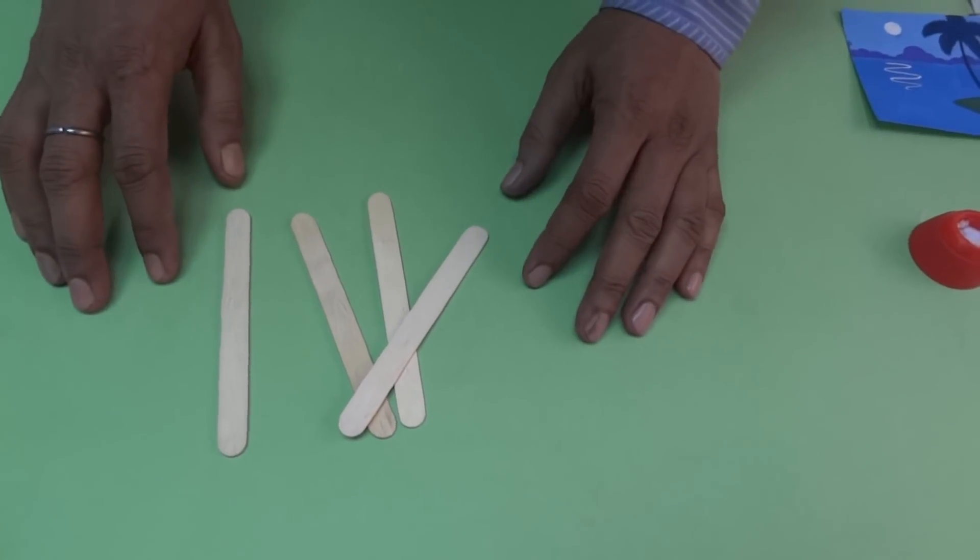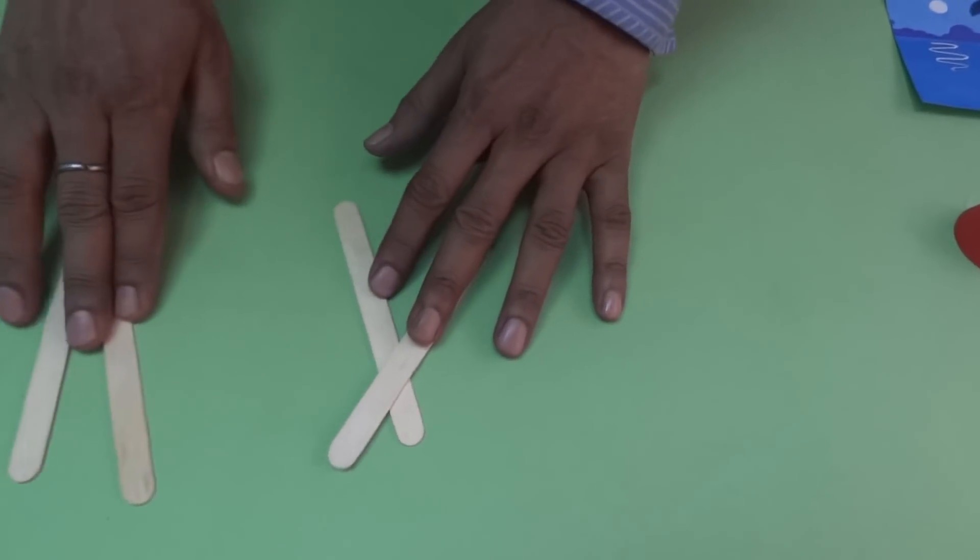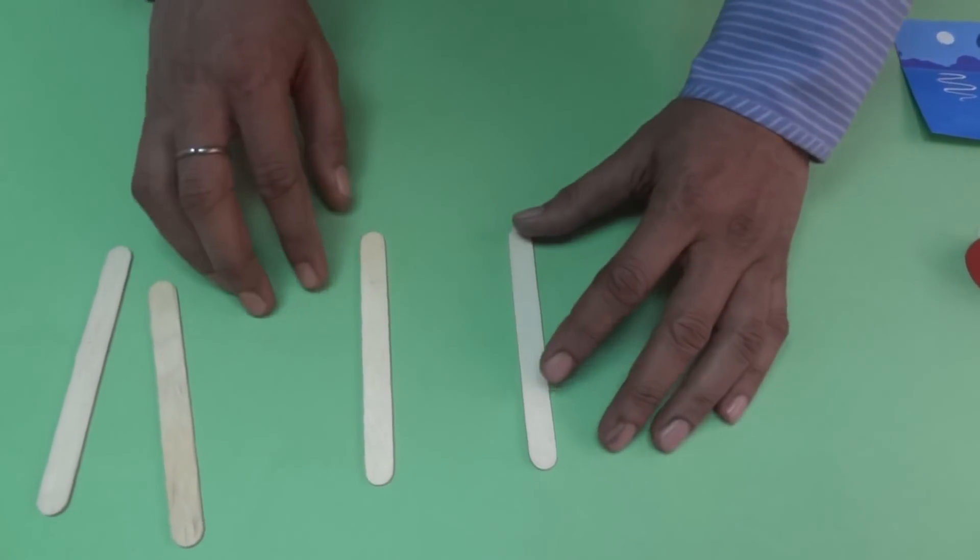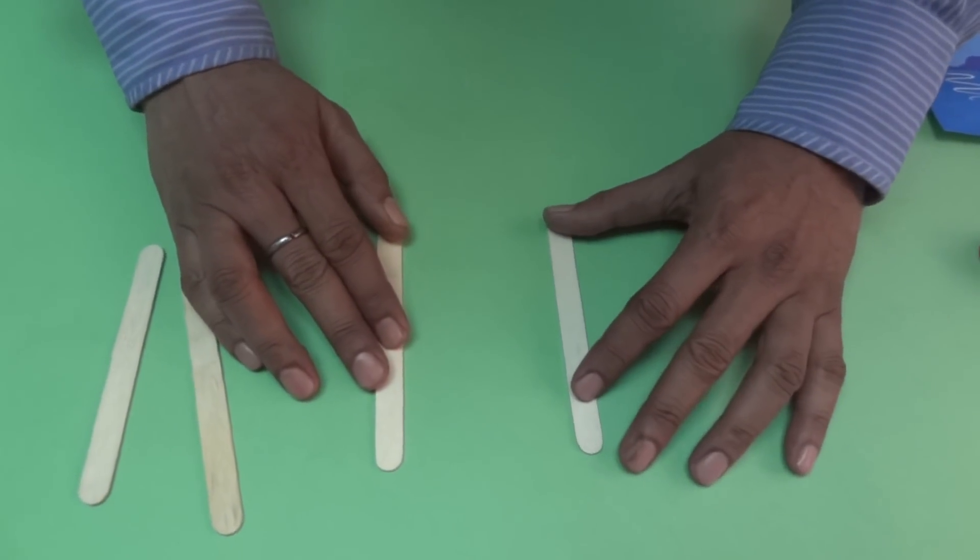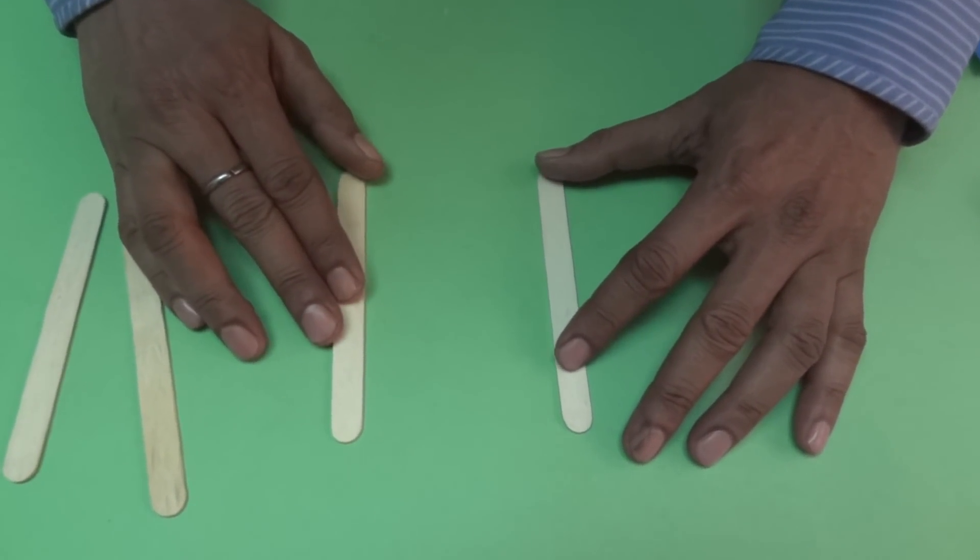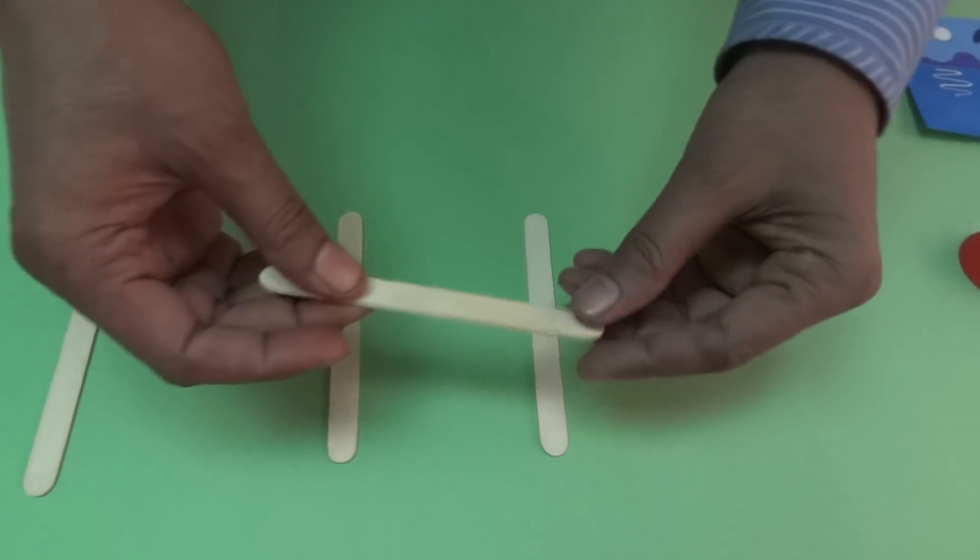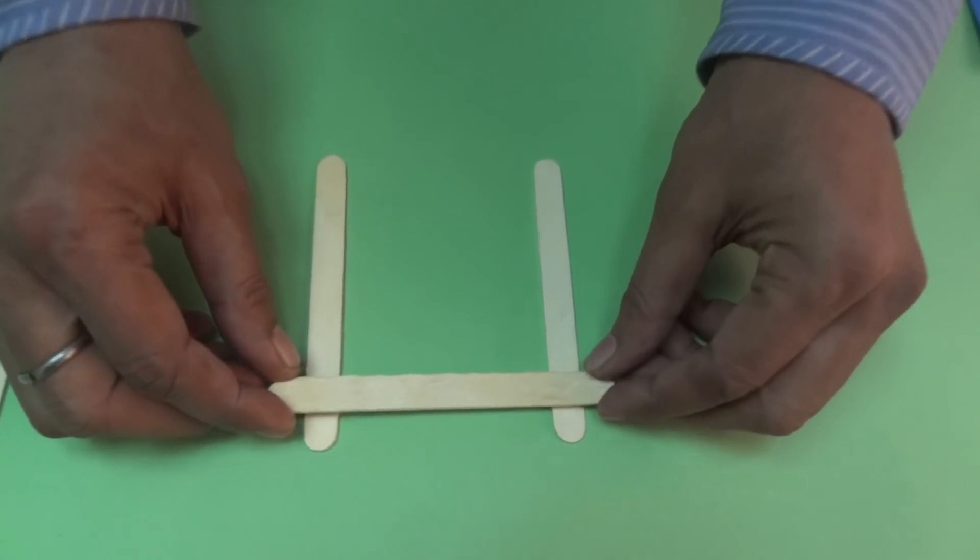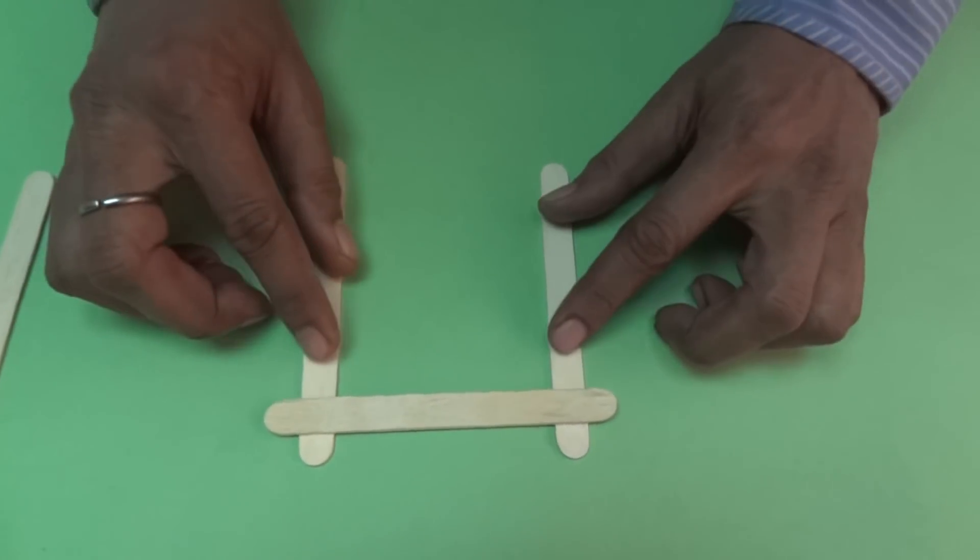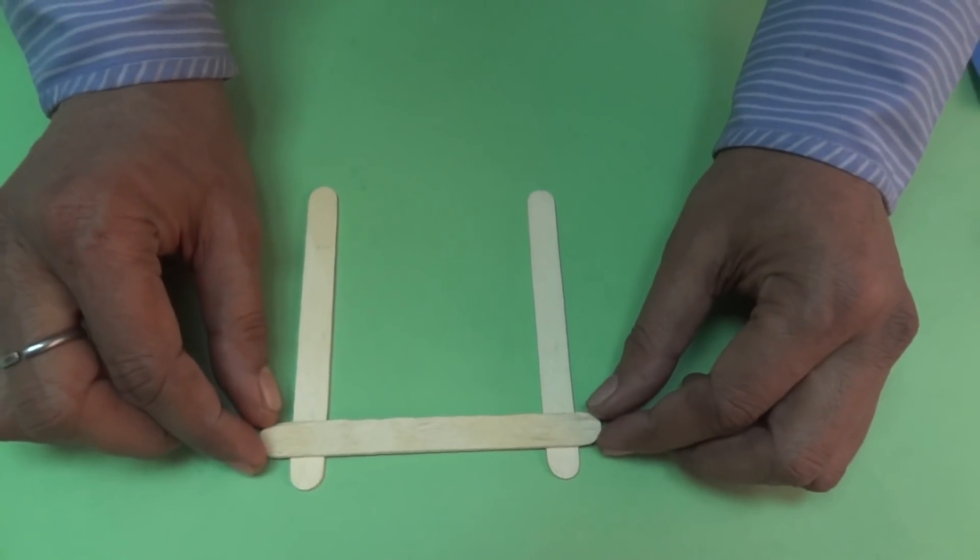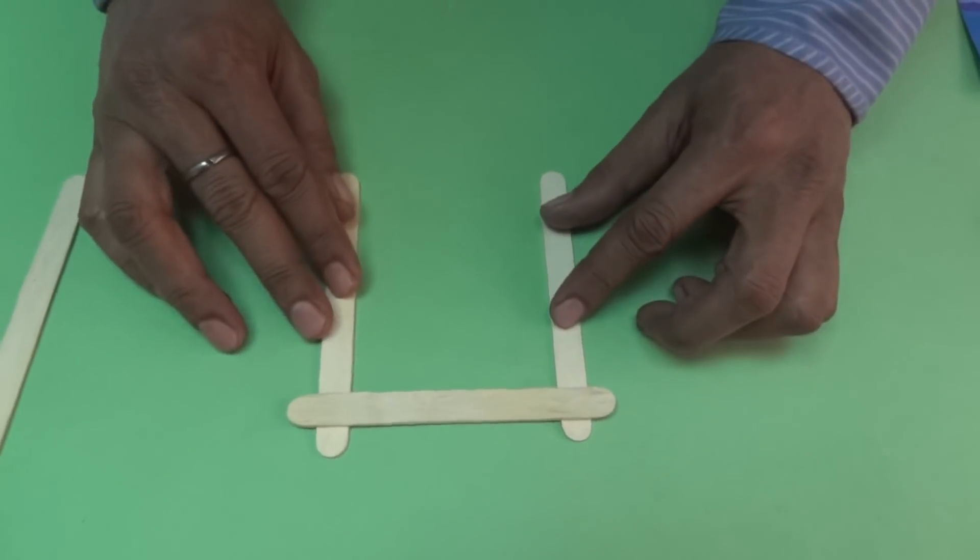First of all, take two sticks and place them parallel to each other like this. Now you pick up the other sticks and place them on top like this.